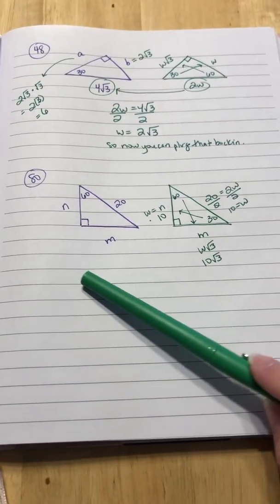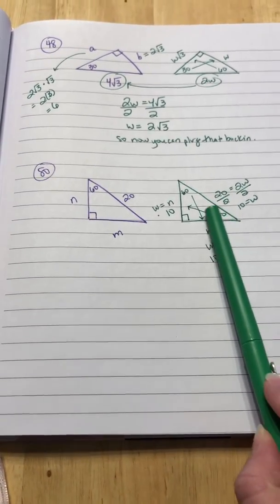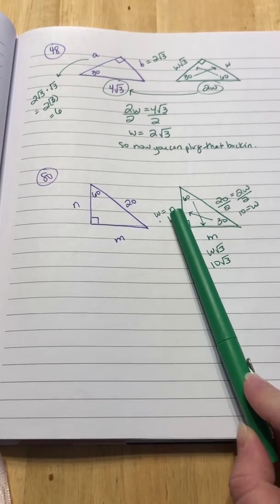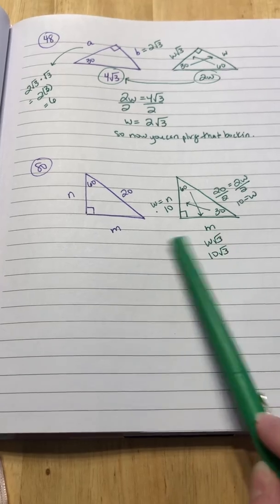So one more. On 80, you have a 60 up here, 90, so that means this must be 30. Okay, so across over here, n is going to be your w side. Across from 60 is your w square root of 3 side.